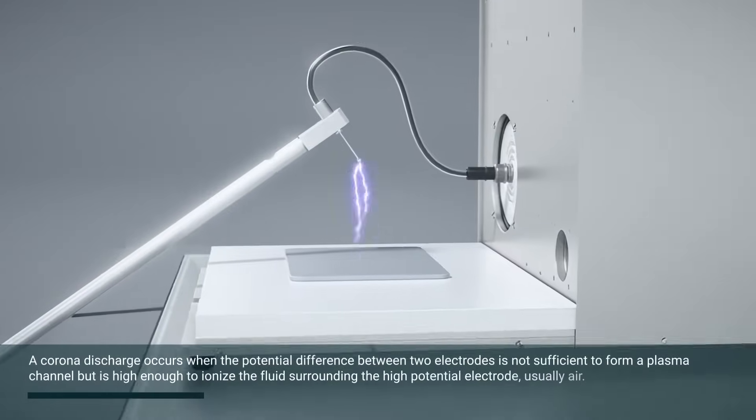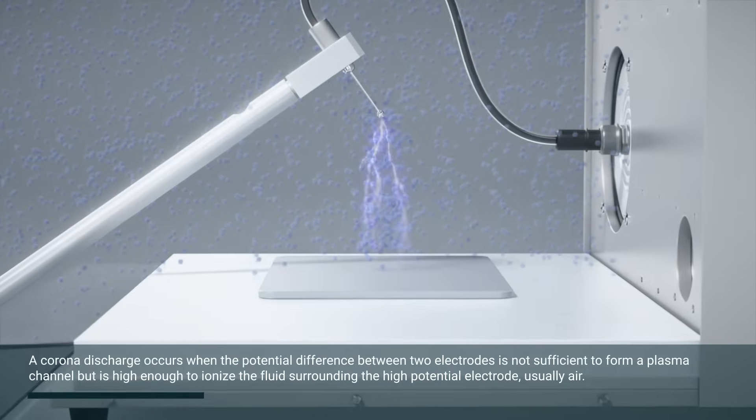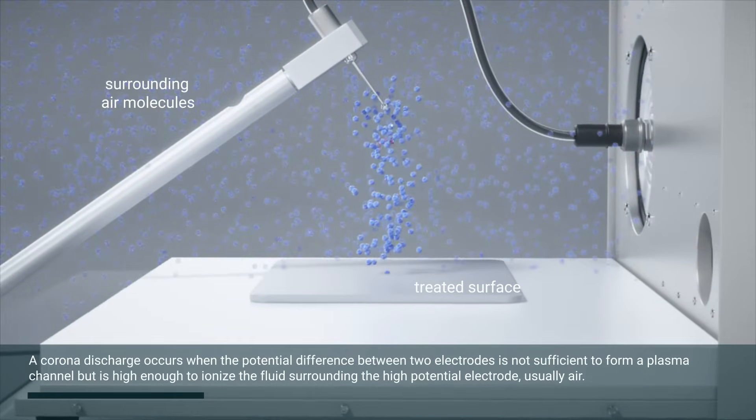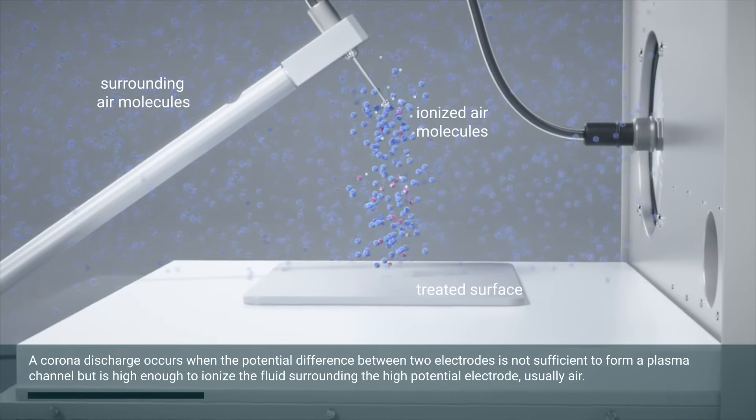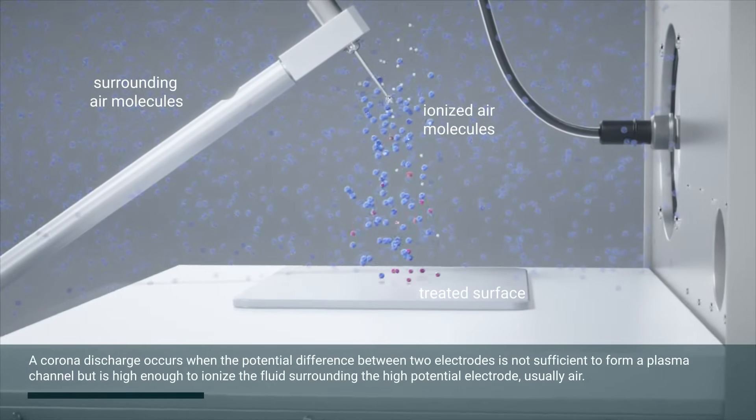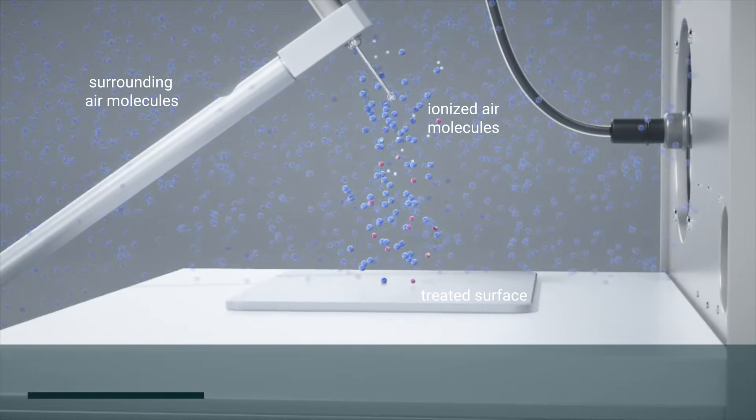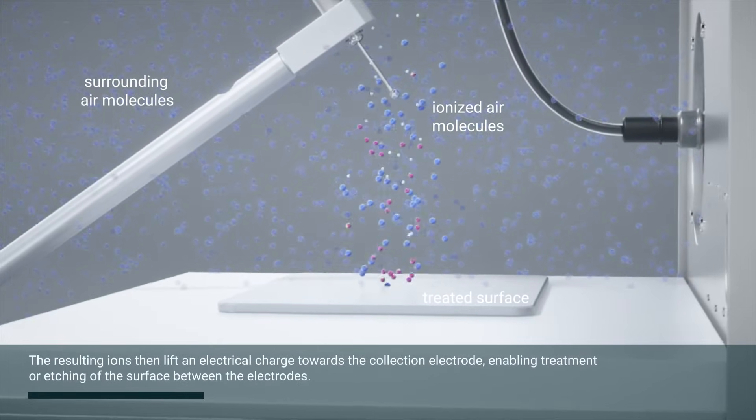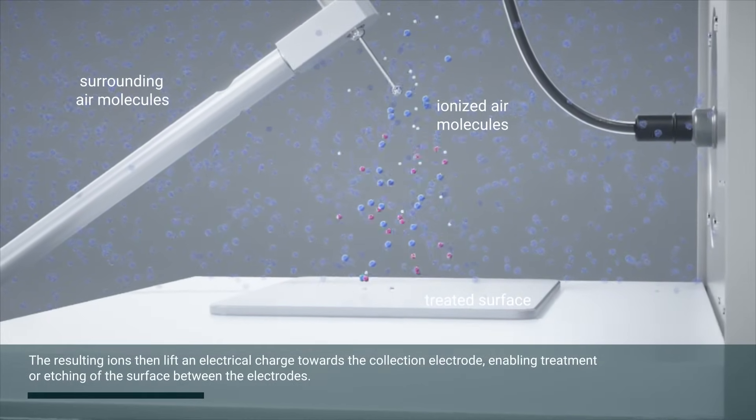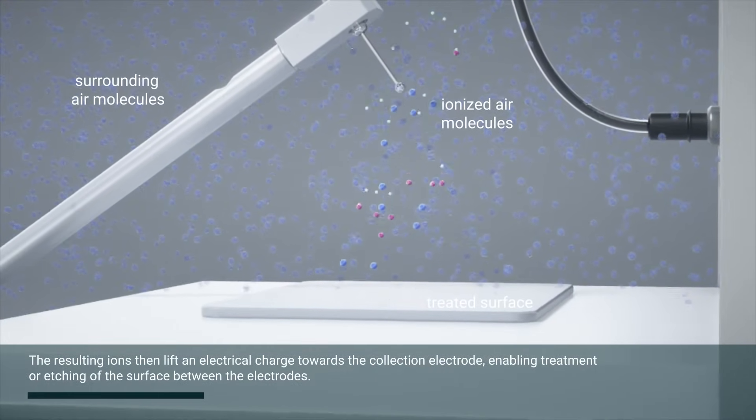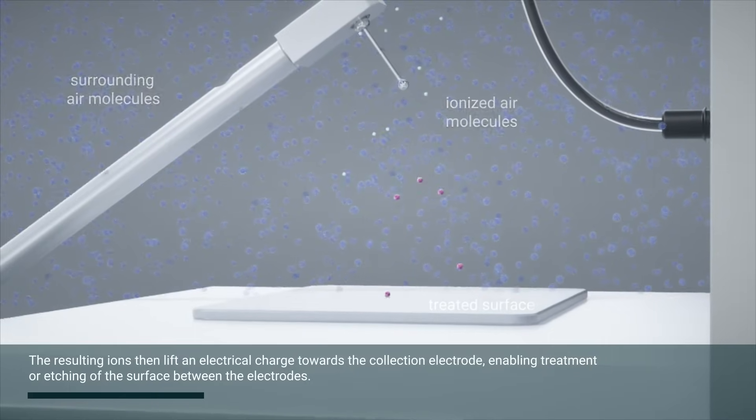A corona discharge occurs when the potential difference between two electrodes is not sufficient to form a plasma channel, but is high enough to ionize the fluid surrounding the high-potential electrode, usually air. The resulting ions then lift an electrical charge towards the collection electrode, enabling treatment or etching of the surface between the electrodes.